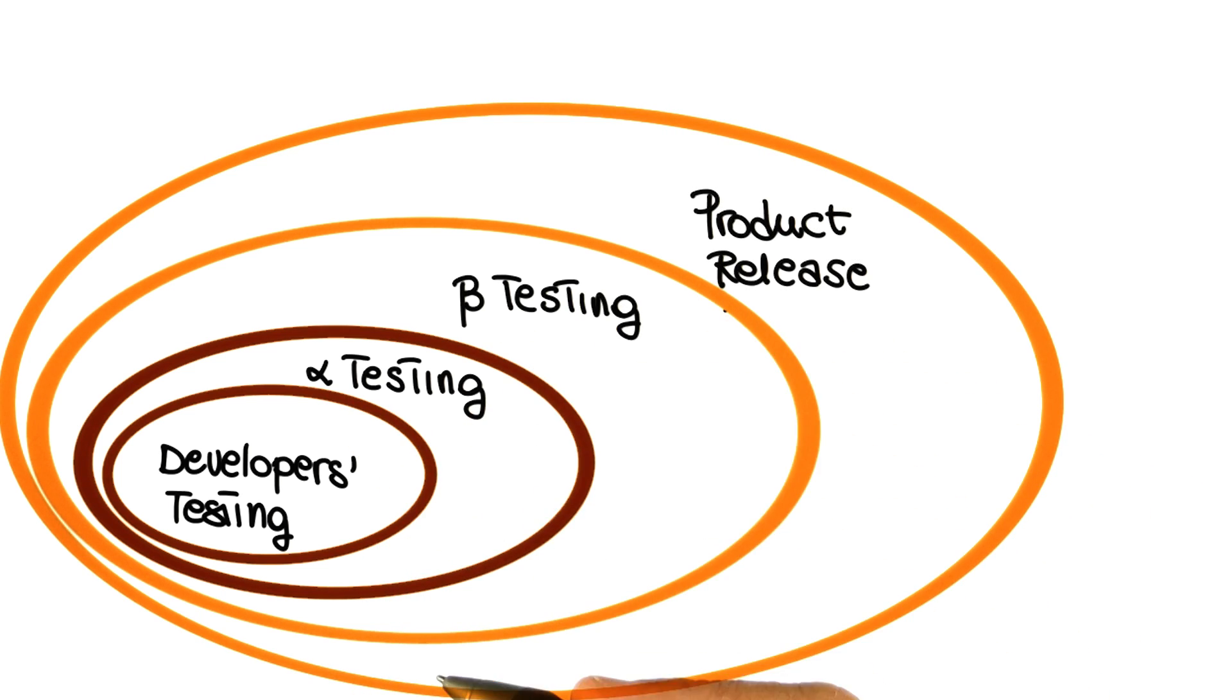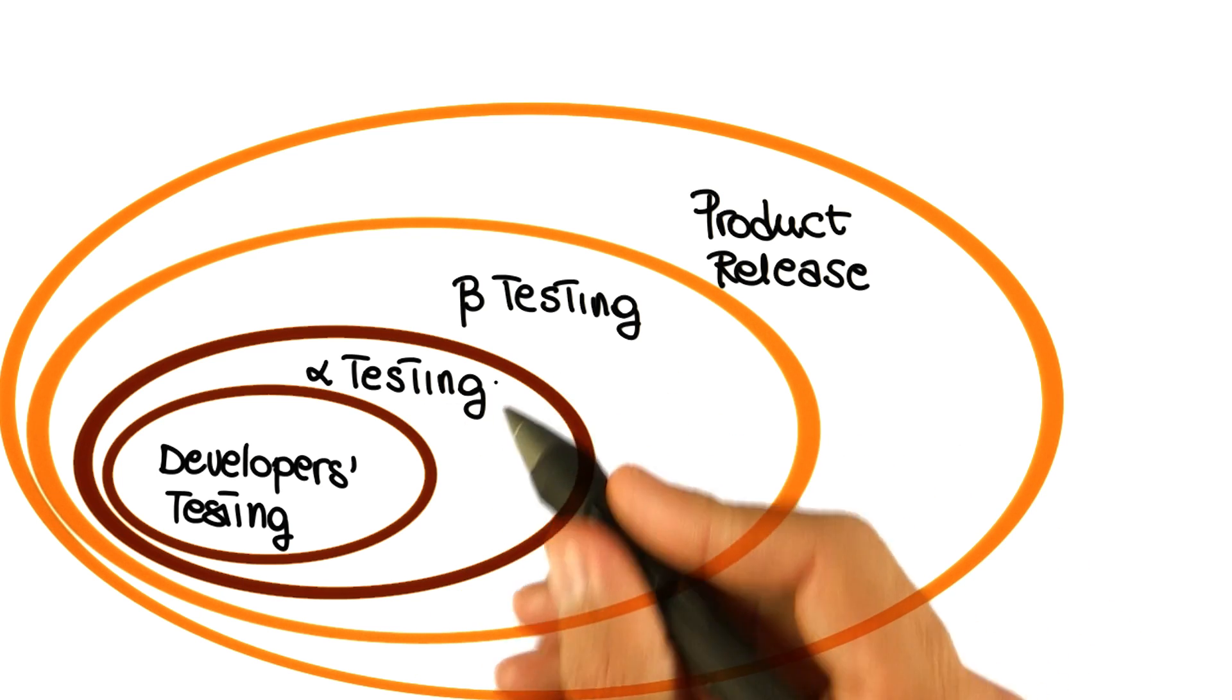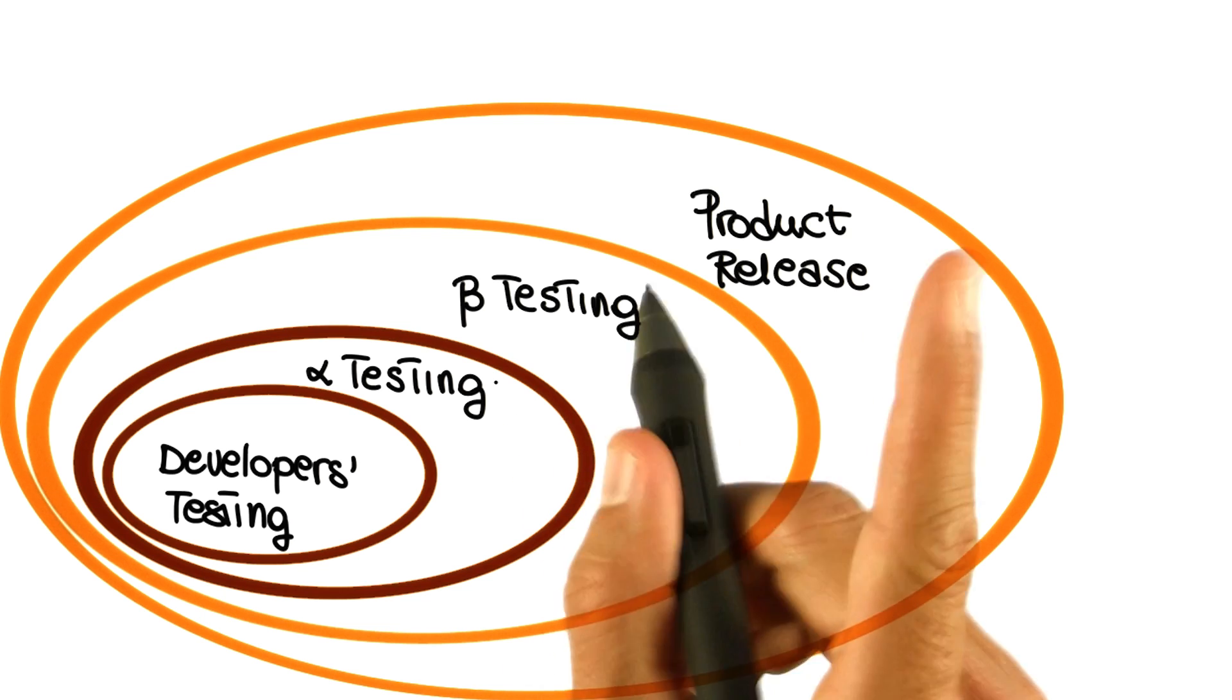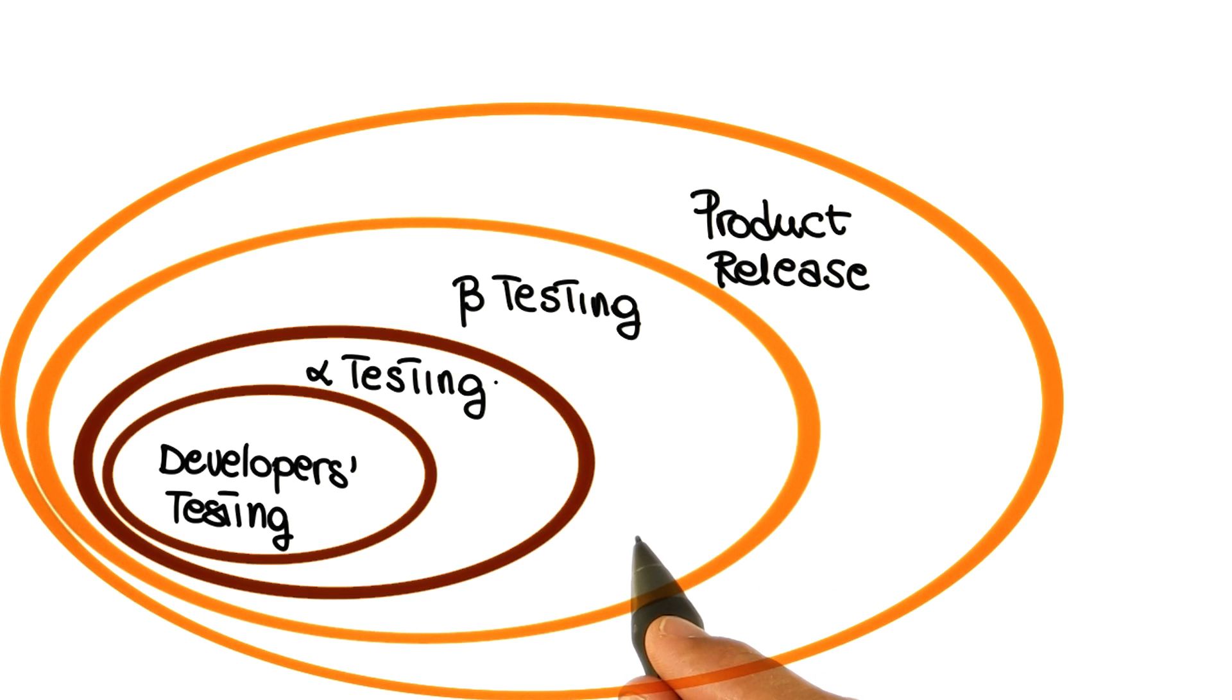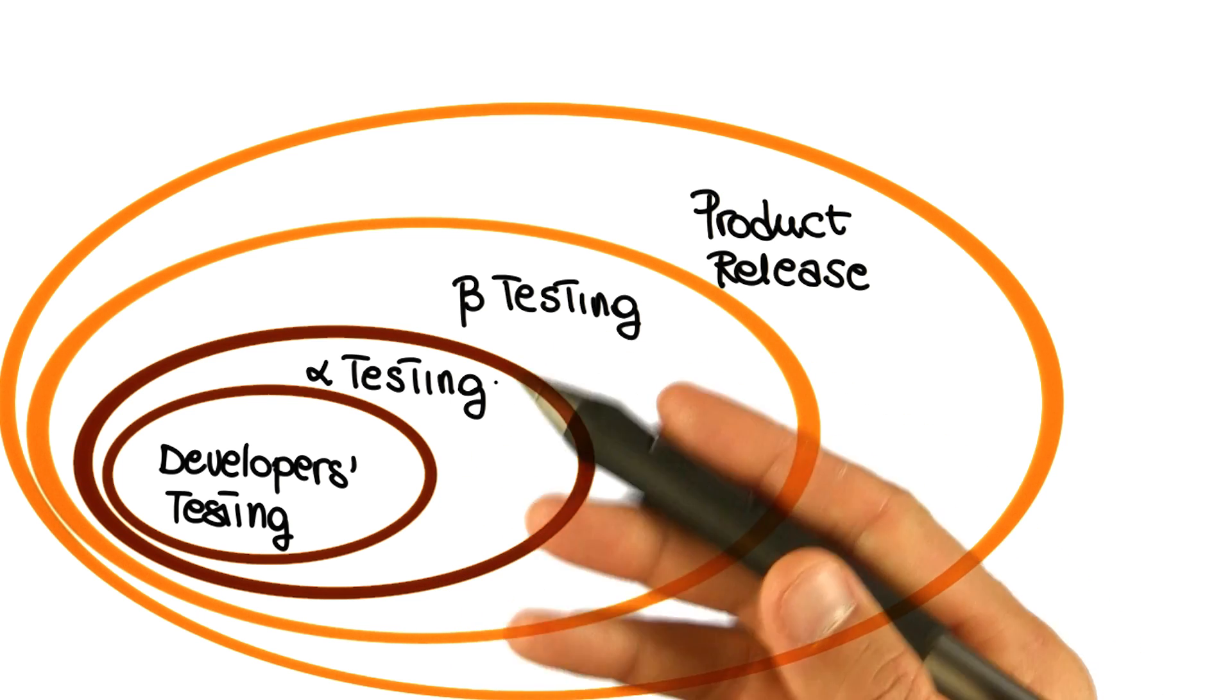You might wonder, why do we need to do both alpha and beta testing, why not just one of the two? The reason is that alpha testing is performed to iron out the very obvious issues that still escape testing, but we want to do that before involving people outside the organization. The rationale is that alpha testers have a higher tolerance for problems than beta testers. We expect a mostly working system.